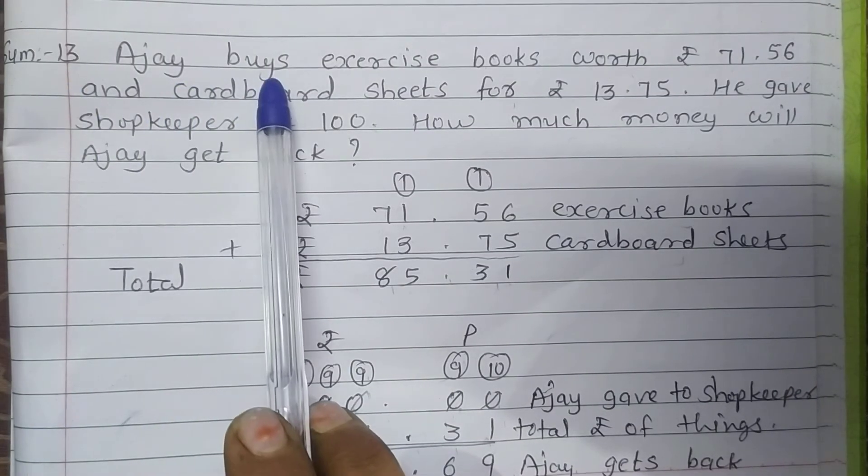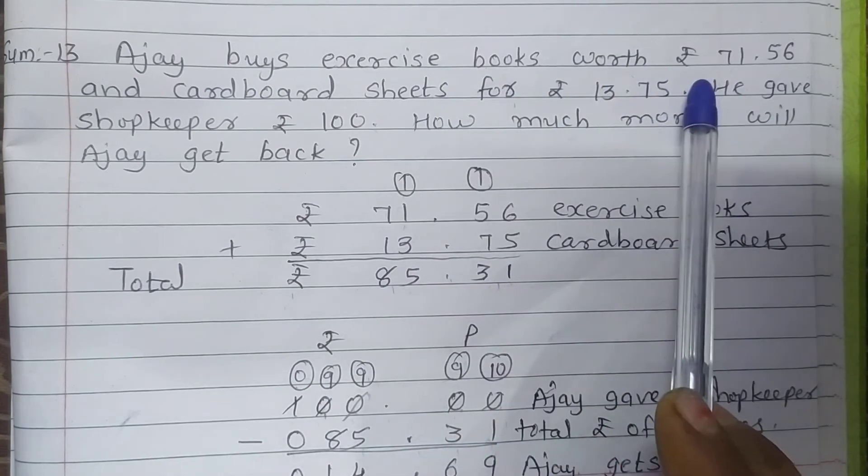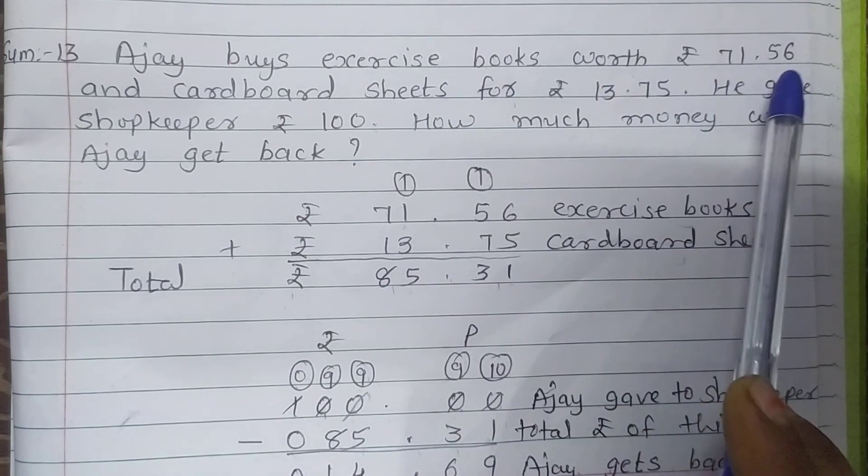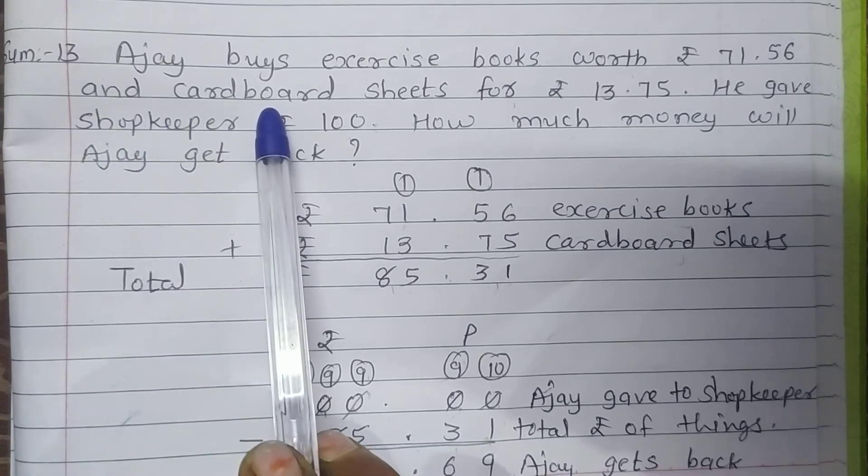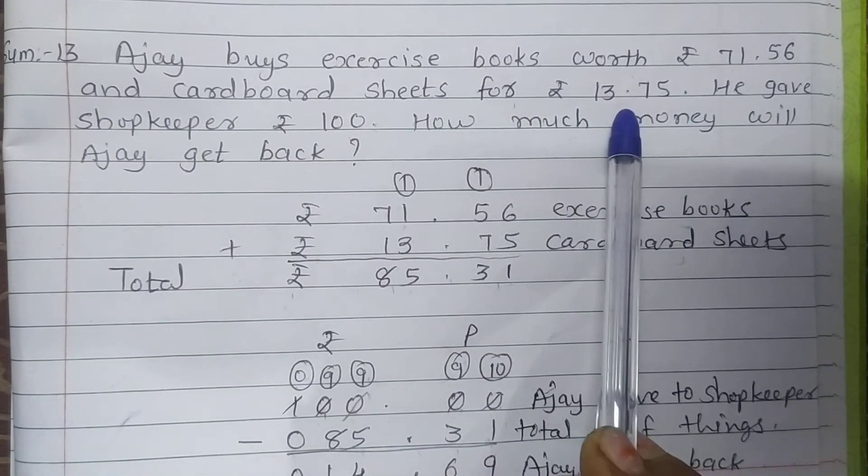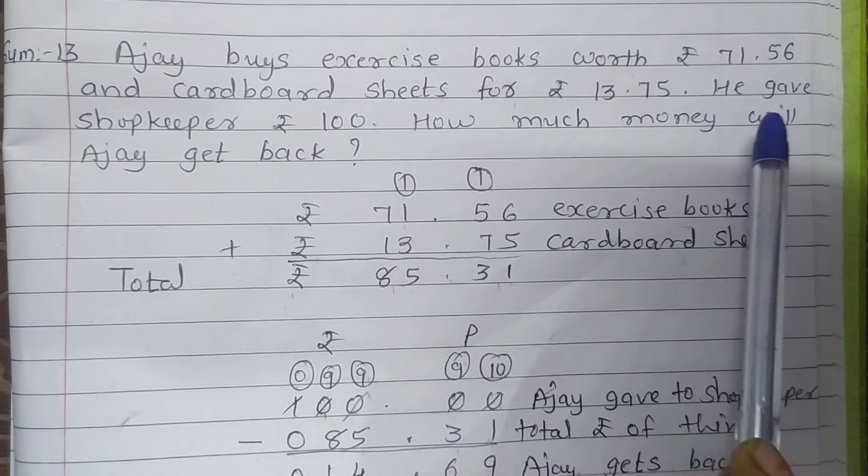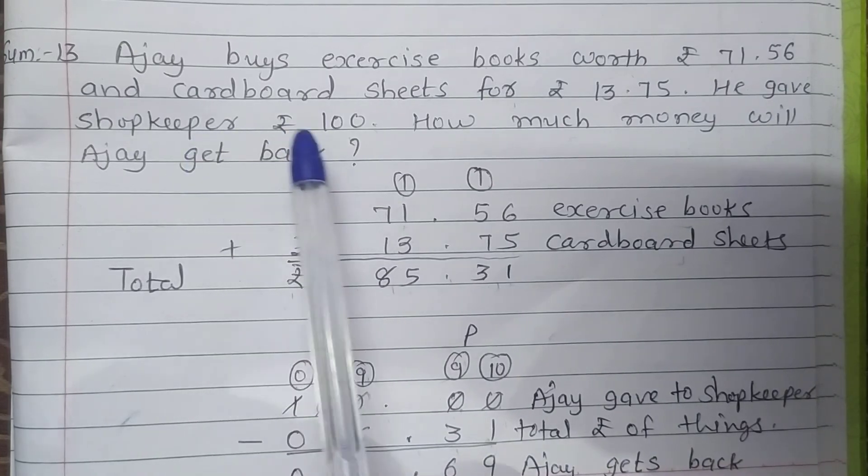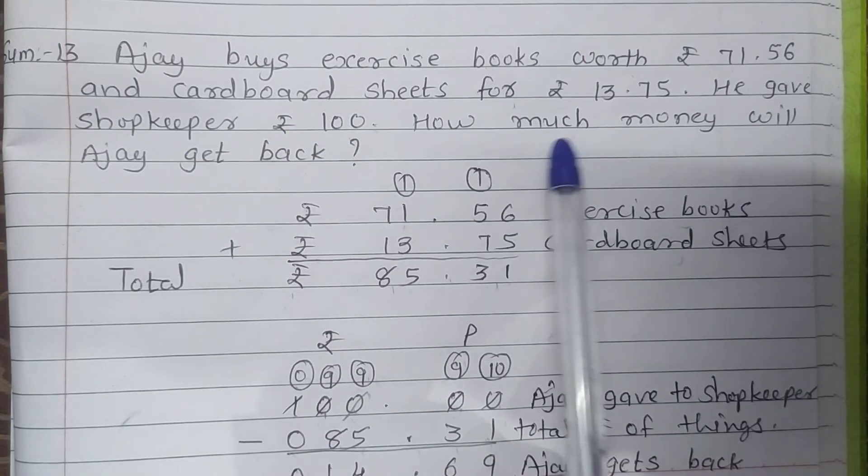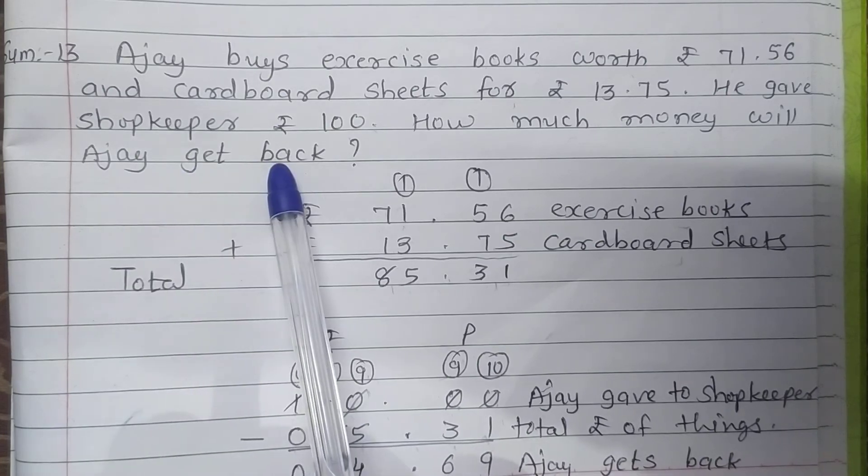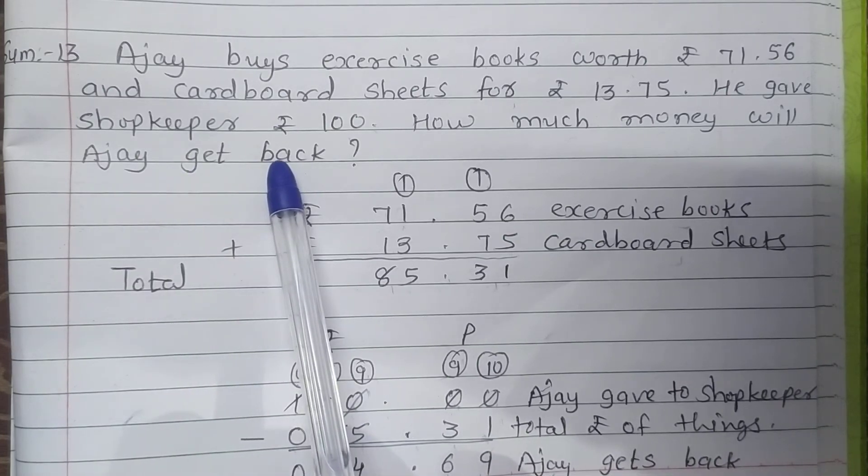Ajay buys exercise books worth Rs. 71.56 and cardboard sheets for Rs. 13.75. He gave shopkeeper Rs. 100. How much money will Ajay get back?